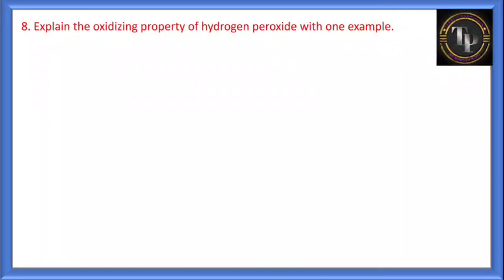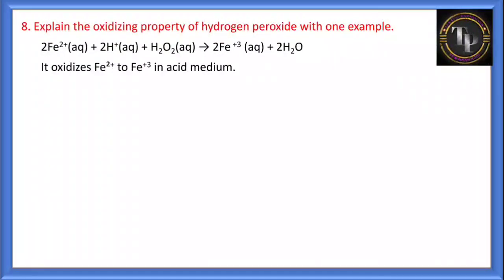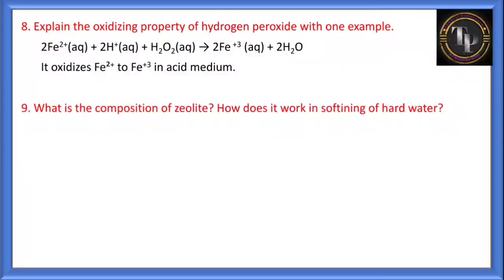Explain the oxidizing property of hydrogen peroxide with an example. H2O2 acts as an oxidizing agent in both acid and basic medium. For example, Fe2+ is converted to Fe3+ — removal of an electron is oxidation. So H2O2 acts as an oxidizing agent in acidic medium as well as in basic medium.